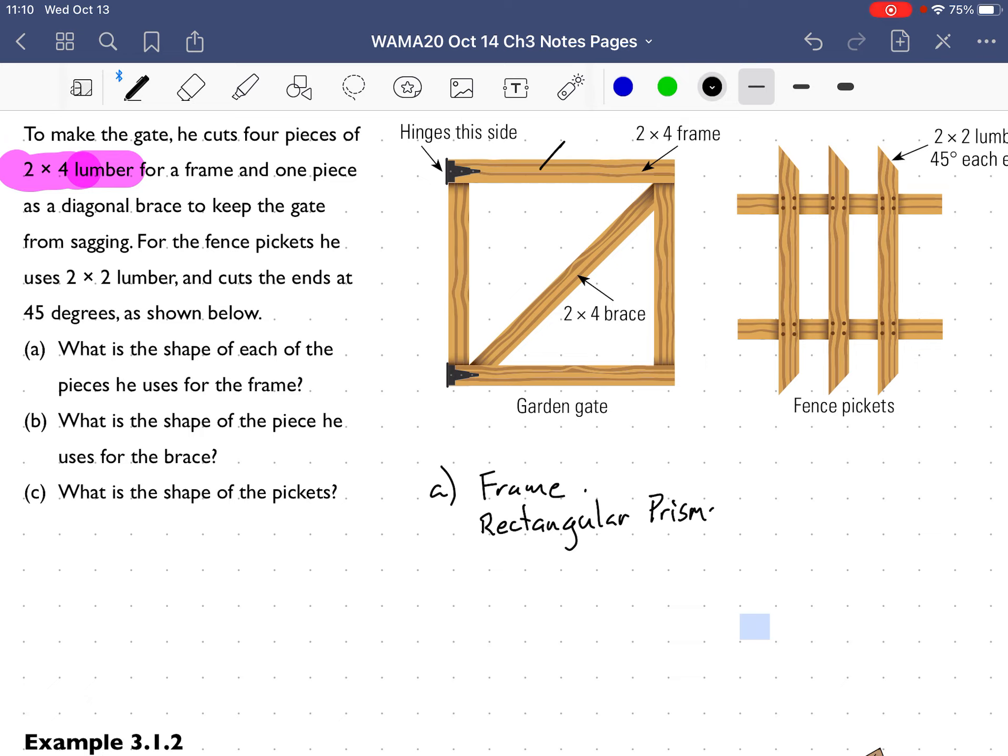We're going to draw out a rectangular prism in three dimensions. Now there's different ways to do this. I'm just going to start with the front face and it's going to go back like this.